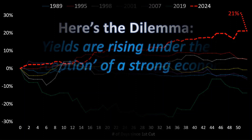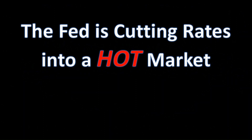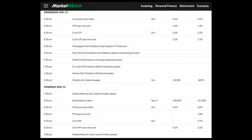Here's the dilemma: yields are rising under the perception of a strong economy. We may not believe it's a strong economy when we look at manufacturing and jobs numbers, but in the bond market and overall economy there is a perception that things are improving. The Fed is cutting rates into a hot market — this is what's troubling. We just got out of an inflationary cycle, and the Federal Reserve is cutting rates into a strong stock market and a strong yield curve.